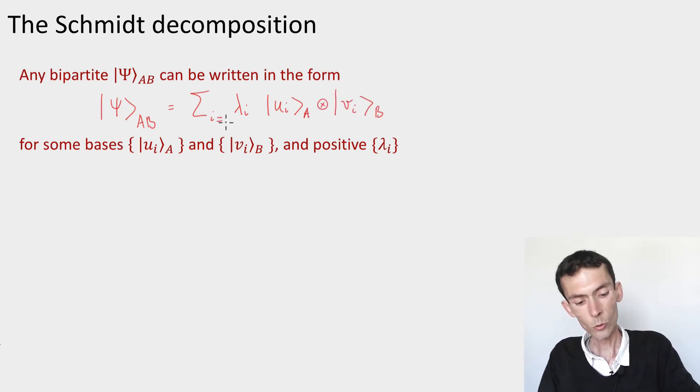This index i here is going to range from 1 to the minimum of the dimension of the A system and the dimension of the B system.